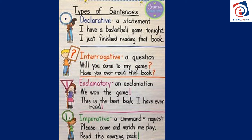Number two: an interrogative sentence — can you say that? An interrogative sentence asks a question. For example: 'Will you come to my game?' 'Have you ever read this book?' 'What time is it?' It ends with a question mark. Number three: an exclamatory sentence is an exclamation — when we say something with emotion and feeling. For example: 'We won the game!' 'This is the best book I ever read!' We say it stronger than other sentences, and it ends with an exclamation mark. The verb is 'exclaim,' meaning to say something strongly.